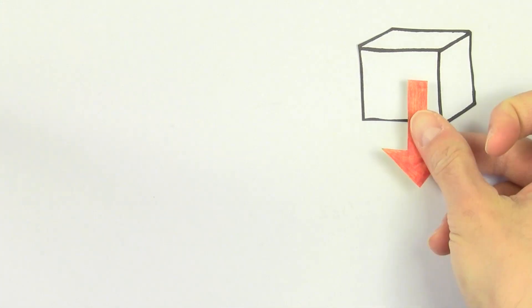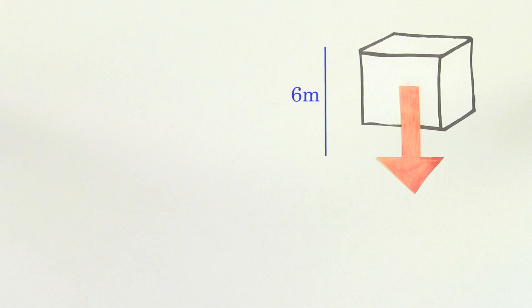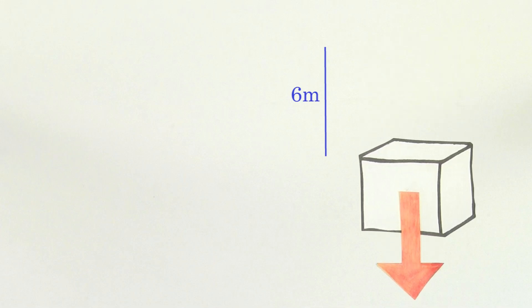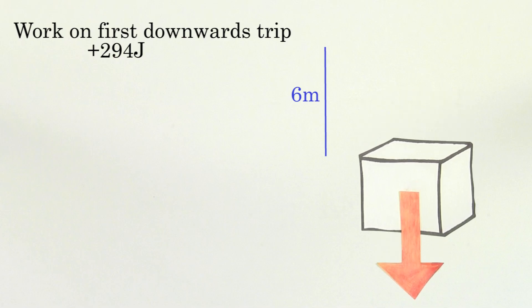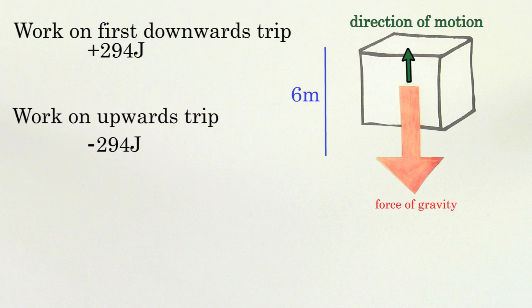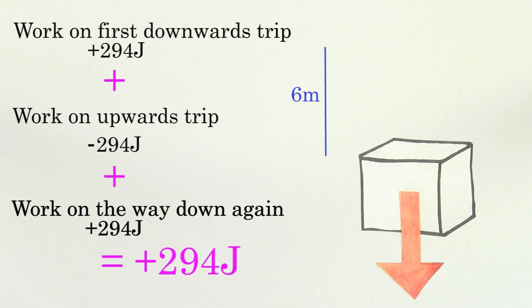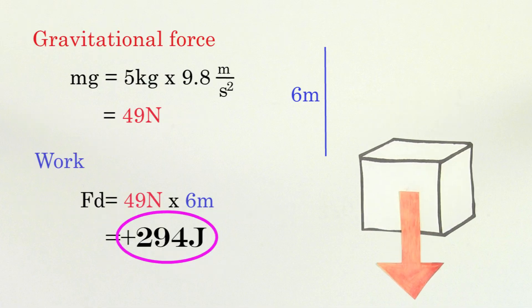Now let's start over. Say the mass again moves down six meters, but then it moves up six meters, then down again six meters. The work done by gravity for the first downwards trip was 294 joules. Then for the upwards trip, since the gravitational force is pointing in the opposite direction of the motion of the mass, the work done by gravity is going to be negative 294 joules. Then for the last trip downwards, the work again is positive 294 joules. That means that the total work done on the mass from gravity is still 294 joules, just like it was when the mass was lowered only once.